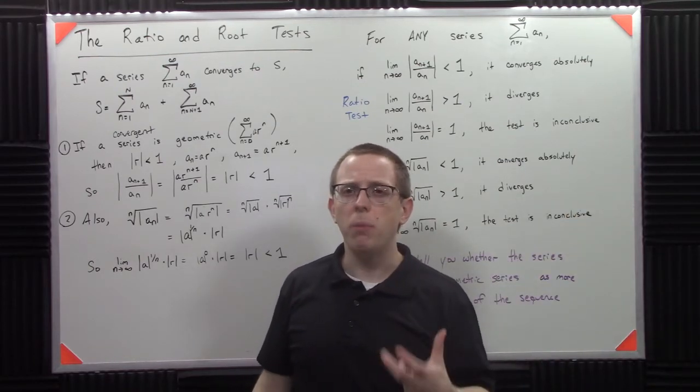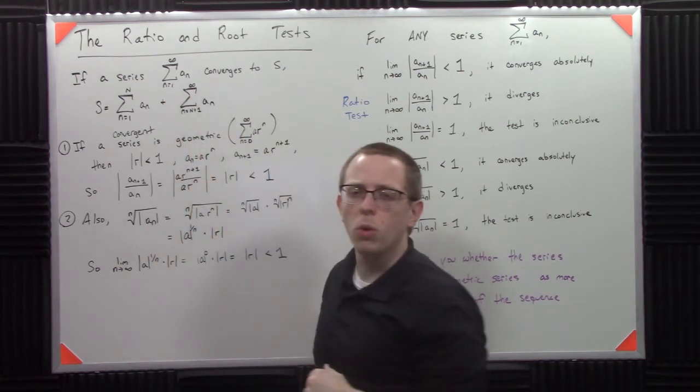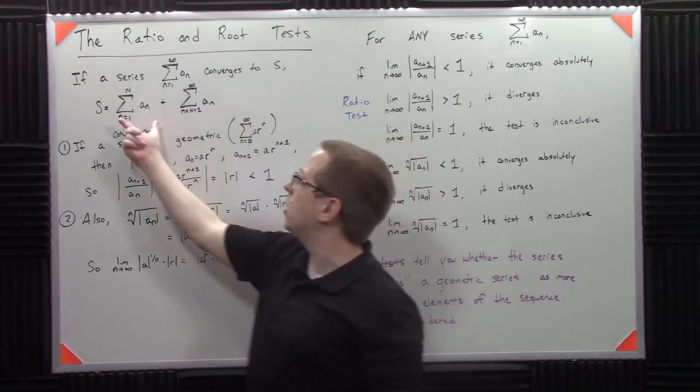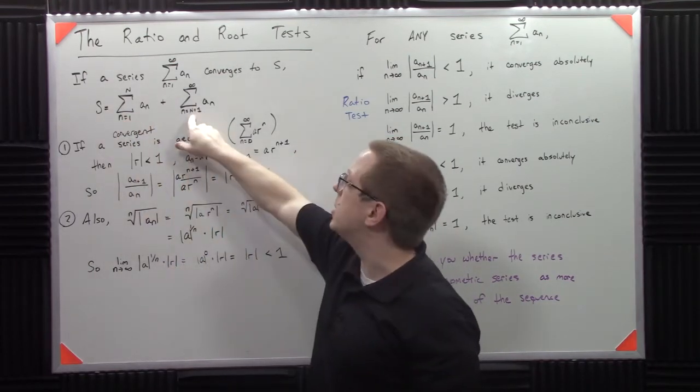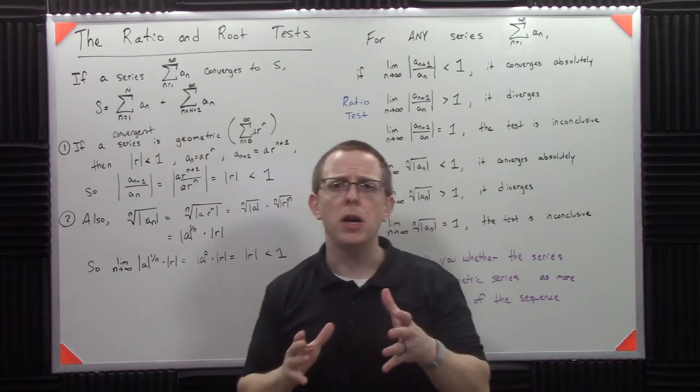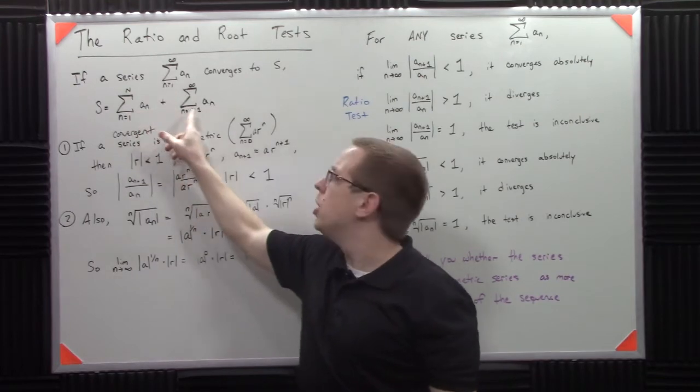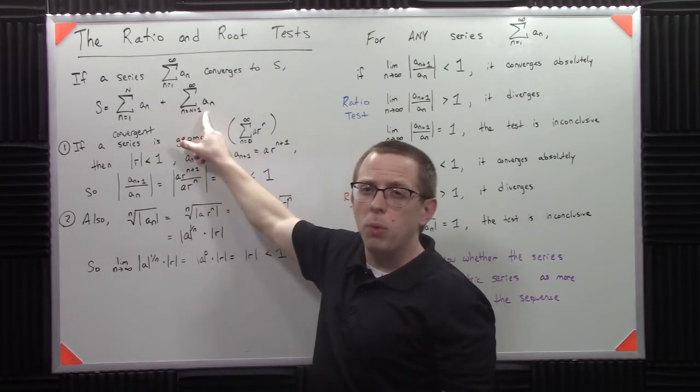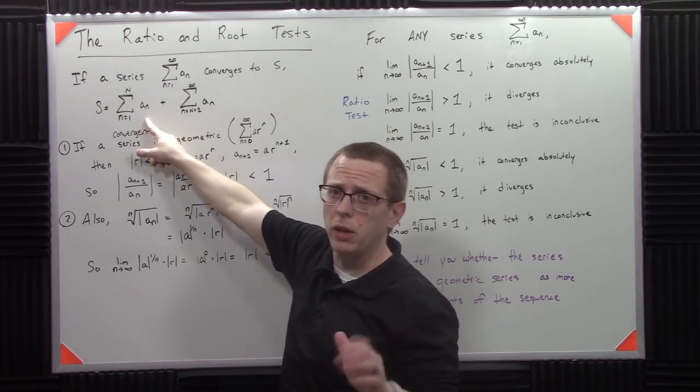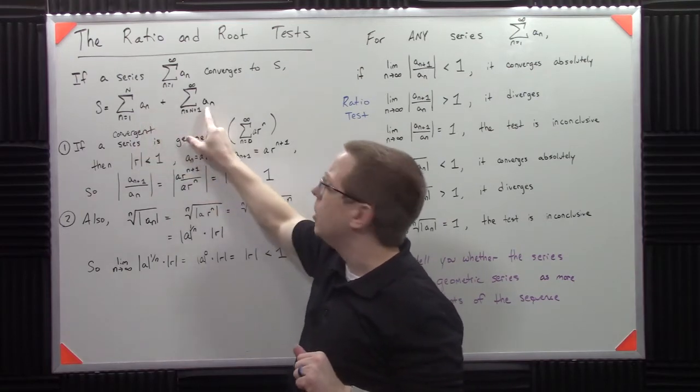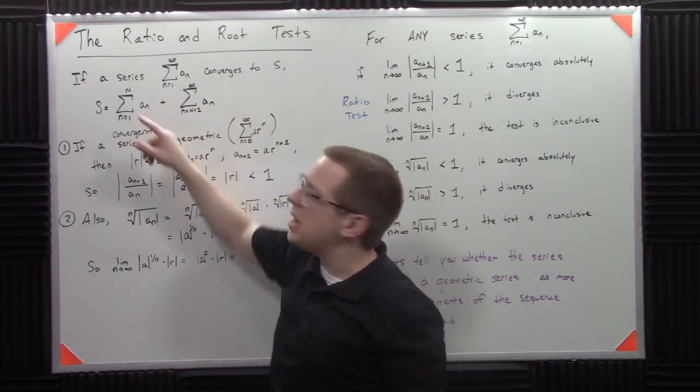What's important when we think about series is really this term. This is really the most important term, even though when we're calculating it, this is the value we keep. The reason I say this is the most important term is because if this thing doesn't shrink away to zero, then this thing doesn't converge. So it's important to examine this. But this thing can't shoot off to infinity.